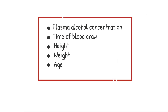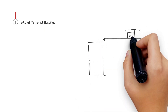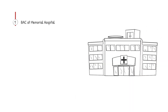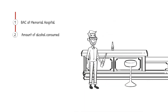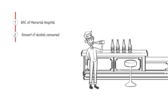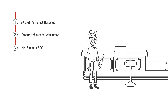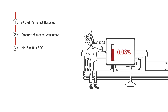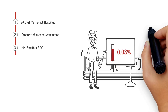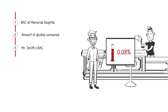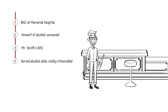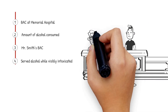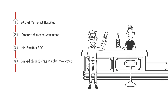Using the information from the narrative, a Robson Forensic toxicologist can evaluate one or more of the following. One, Mr. Smith's BAC at Memorial Hospital. Two, the amount of alcohol that Mr. Smith consumed over the course of the evening. Three, Mr. Smith's BAC at the time he was served his last drink and at the time of the crash incident. Four, if Mr. Smith was more likely than not served alcohol while visibly intoxicated.